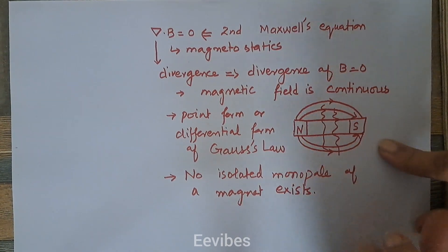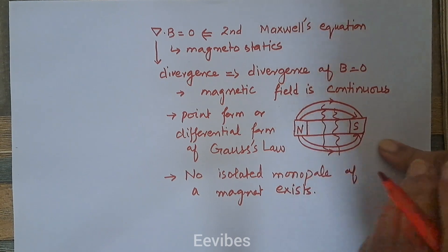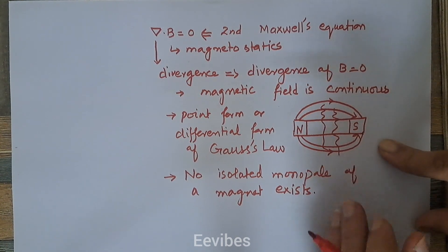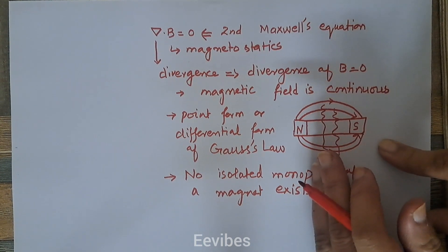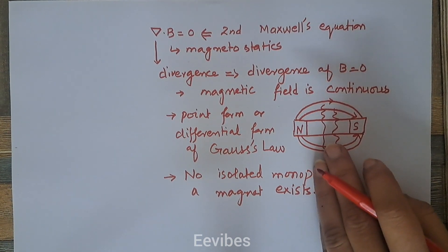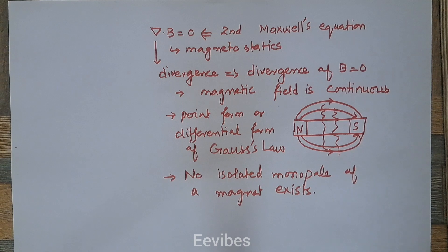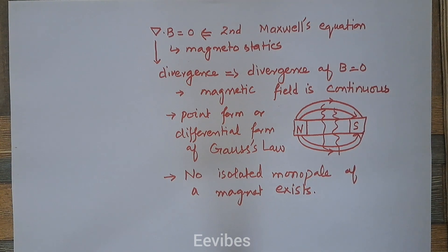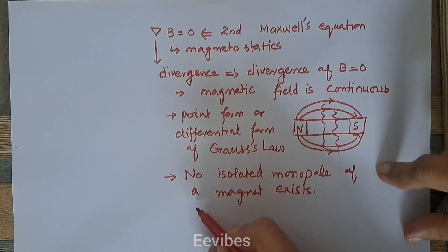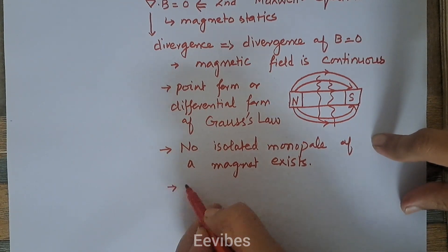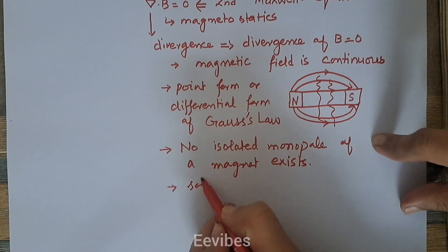No matter how small you cut or break a magnet into pieces, there will always be a north pole and a south pole existing. That's why the divergence of B is always zero, and the magnetic flux density is called solenoidal. So magnetic flux density is just like a solenoidal magnetic field.